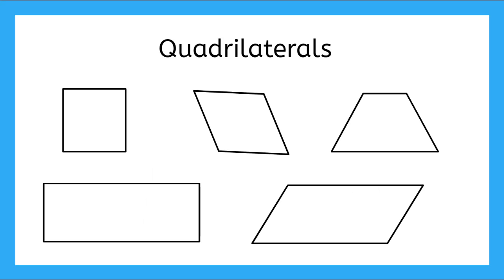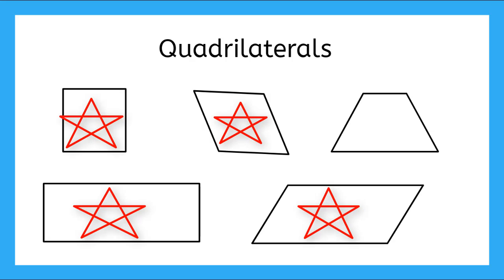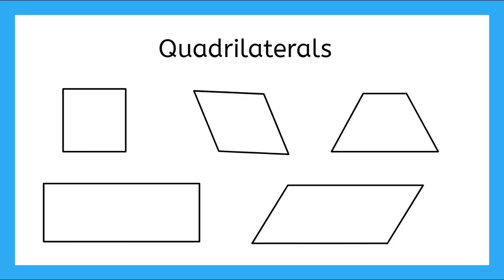Here are five quadrilaterals. Looking at these shapes, which ones have two sets or two pairs of parallel sides? Which ones have four congruent sides? Remember, congruent means line segments that are exact same shape and size. Which ones have two sets of congruent sides? Which ones have one set of congruent sides?